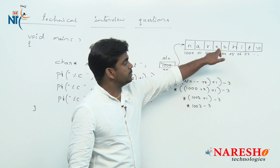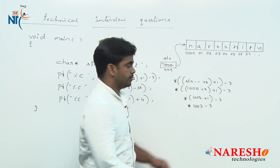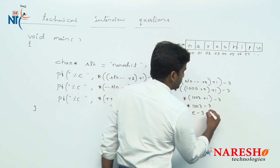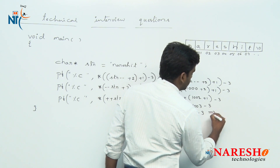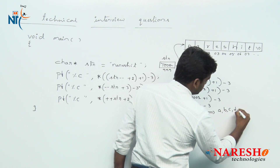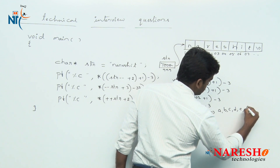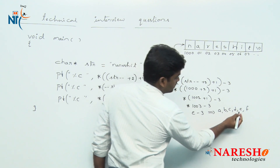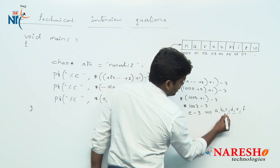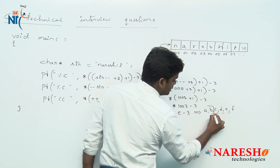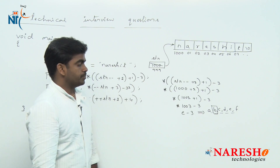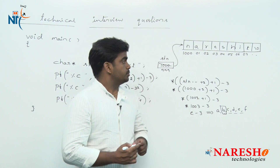Pointer to 1003 is the character 'e'. So we have e minus 3. Looking at the alphabets a, b, c, d, e — e minus 3 means minus 1, minus 2, minus 3. So the result is small 'b'.